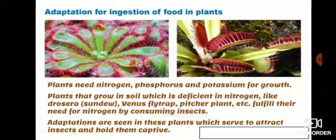Adaptation for ingestion of food in plants continued. Plants need nitrogen, phosphorus and potassium for growth. Plants that grow in soil deficient in nitrogen - like drosera, sundew, venus flytrap, pitcher plant etc. - fulfill their need for nitrogen by consuming insects. Adaptations are seen in these plants which serve to attract insects and hold them captive.